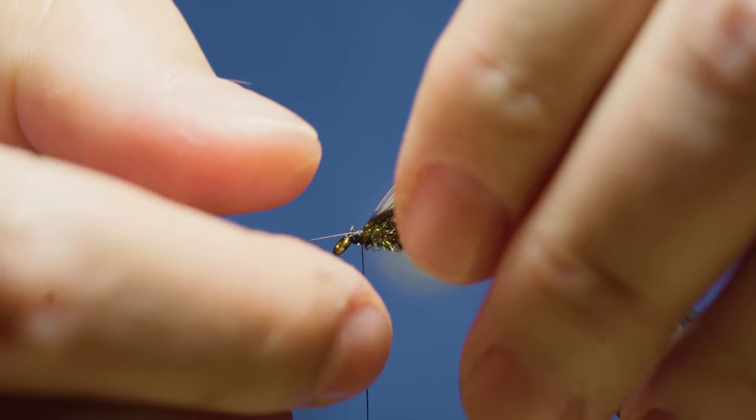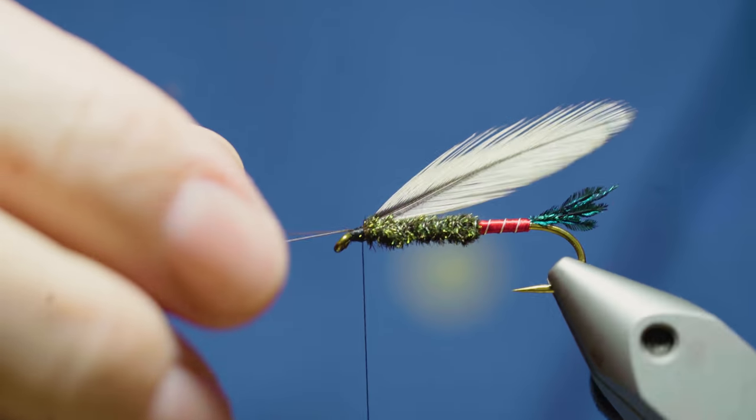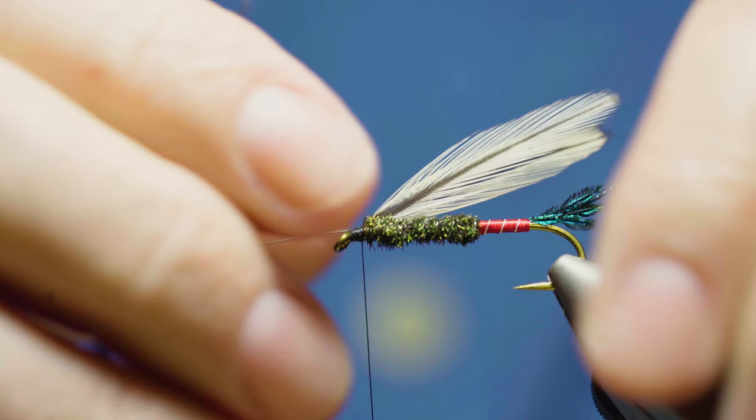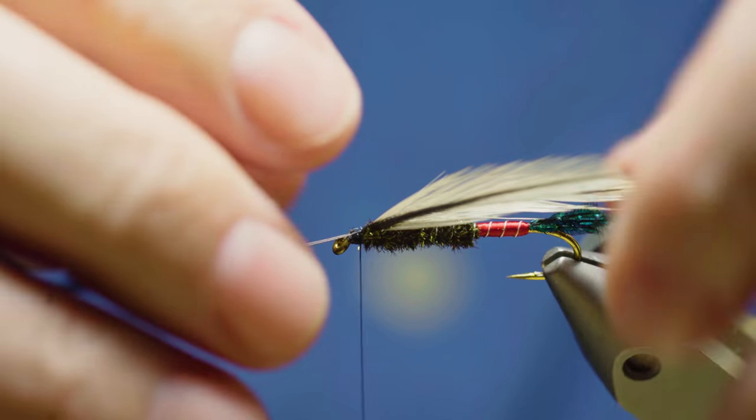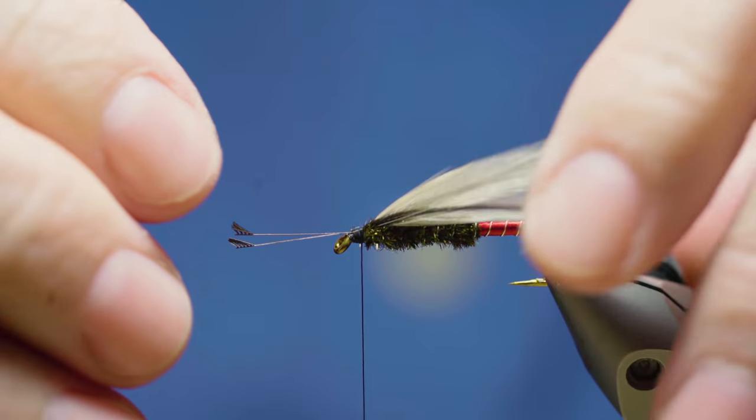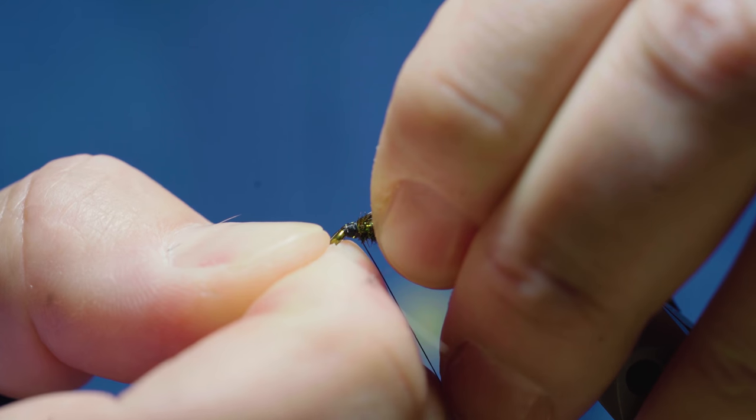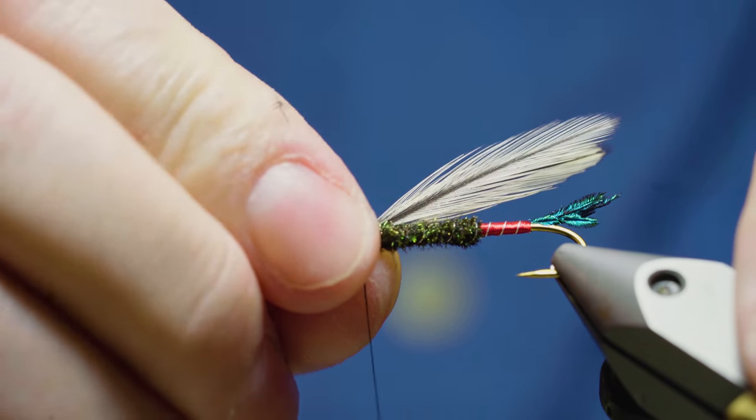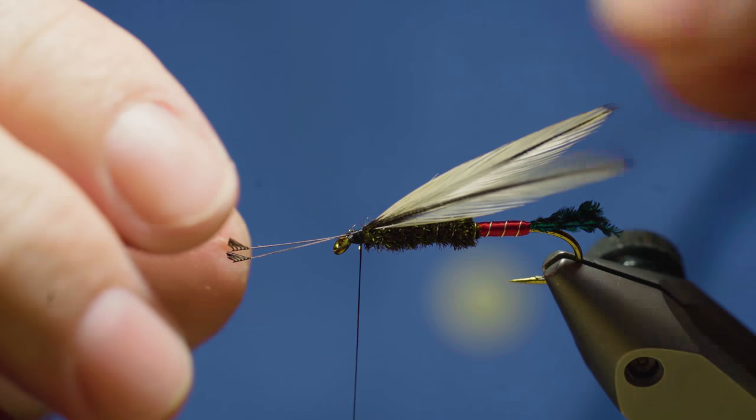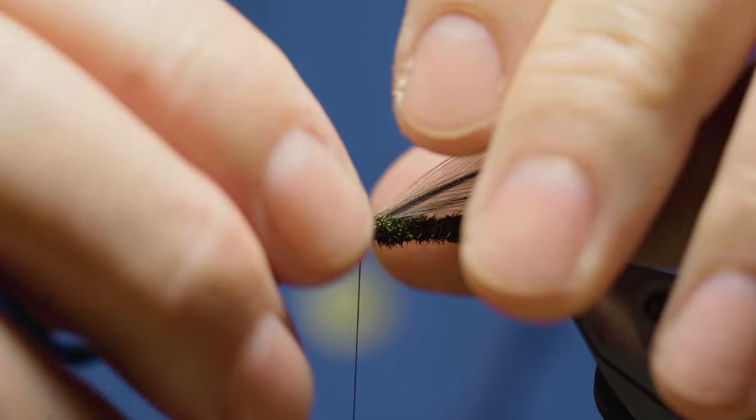And then I will take, actually that thing almost set perfectly the first time. That is dumb luck, that is not normally how that works. And then I will just adjust these to get the angle. Usually they fight you a little bit, trying to get them lined up. That is still a little long but I think I am going to go with it and just pull them up in there a little bit. I just want to make sure they are straight and on top of the fly.